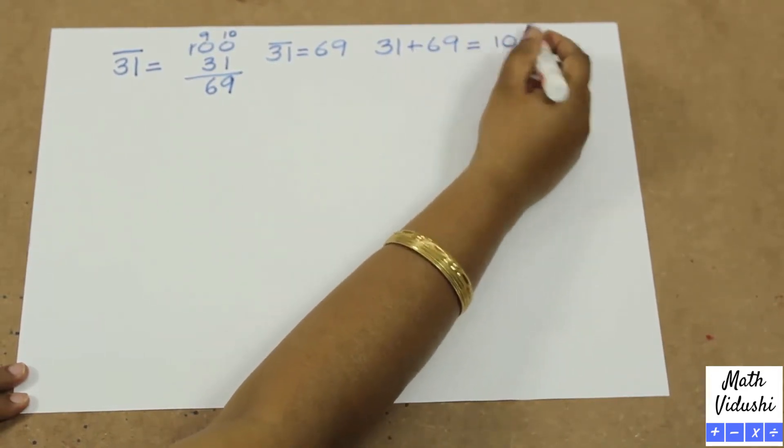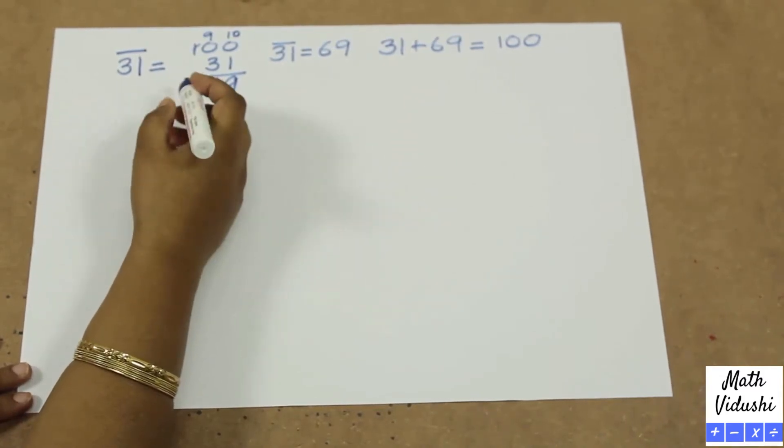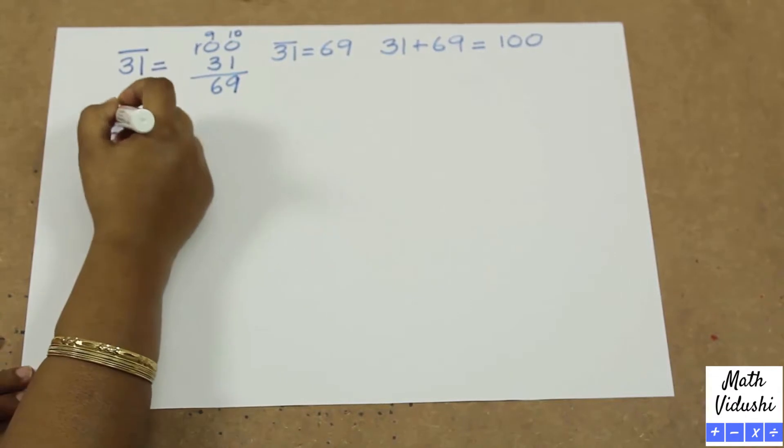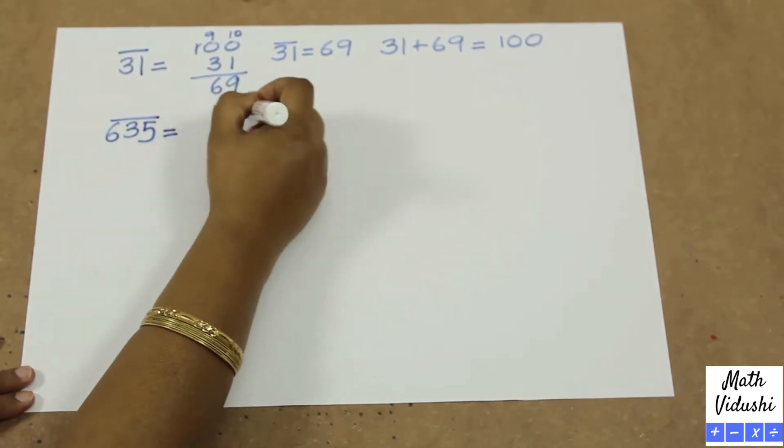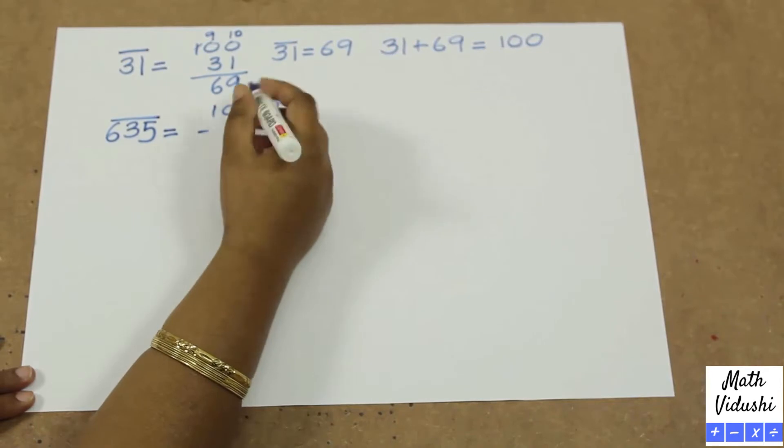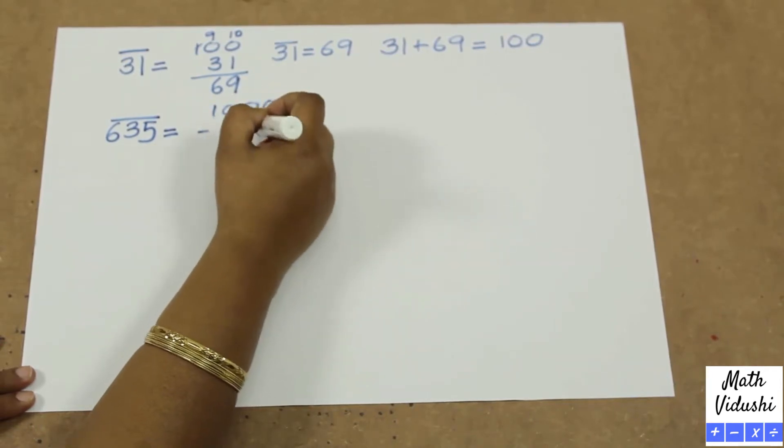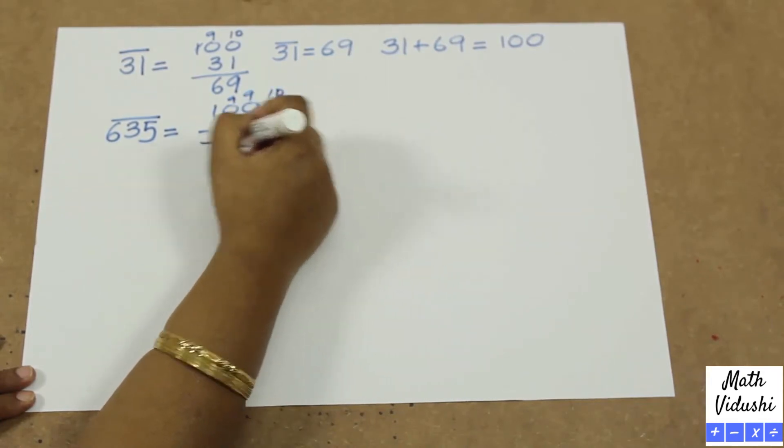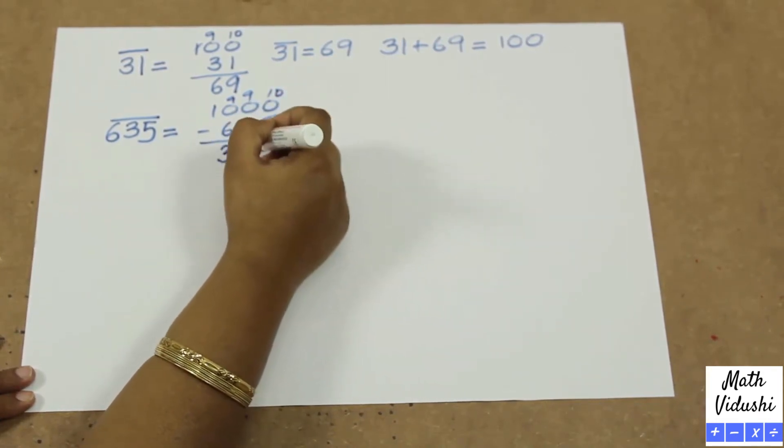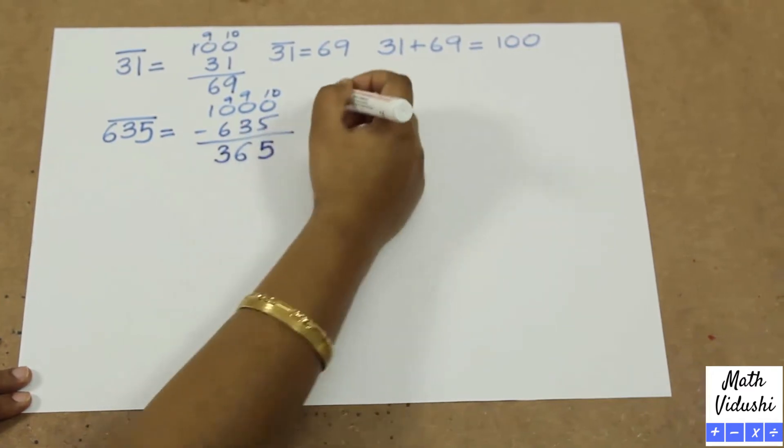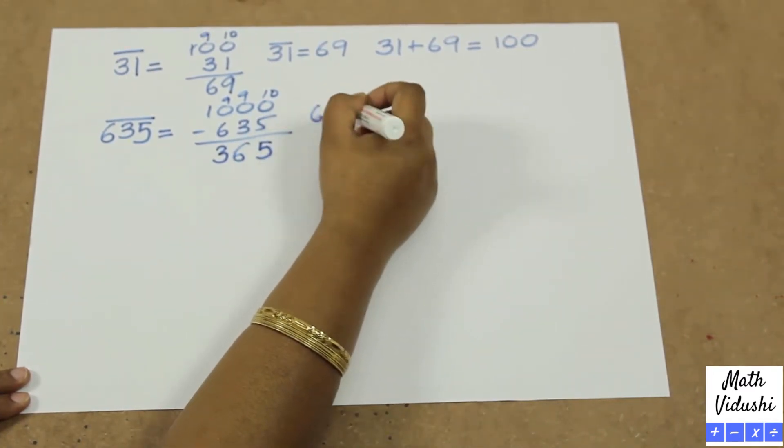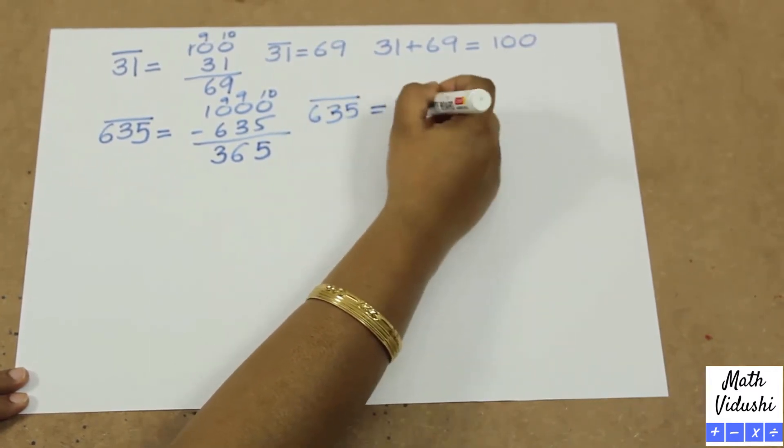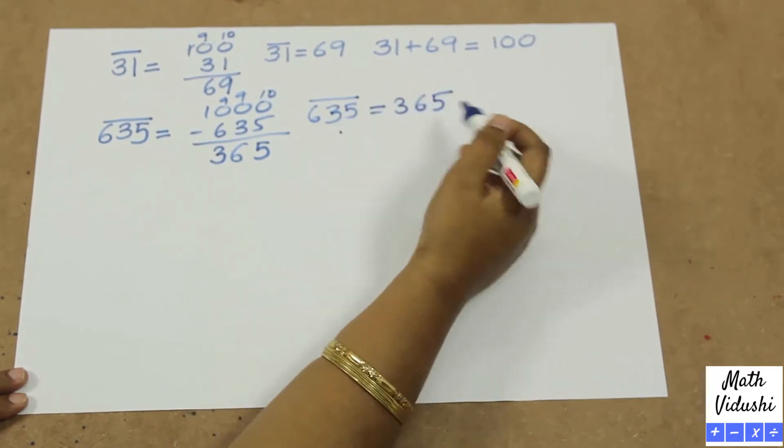We will see more examples. The complement of 635 is equal to 1000 minus 635. We will do all from 9 and last from 10. You will get 365. So you write 635 bar equal to 365. So 635 plus 365 is again 1000.